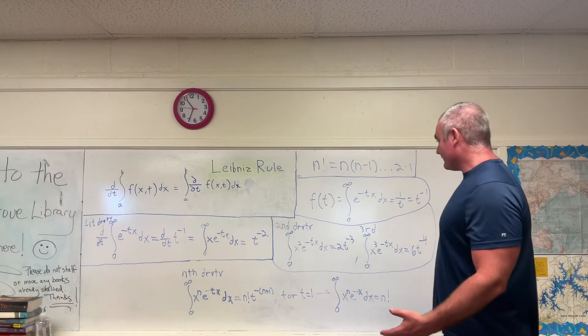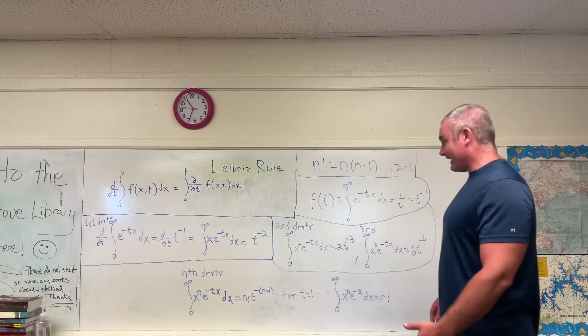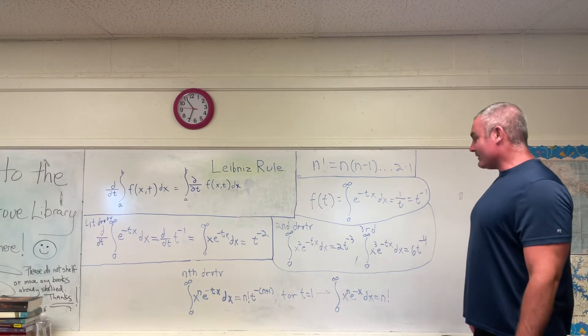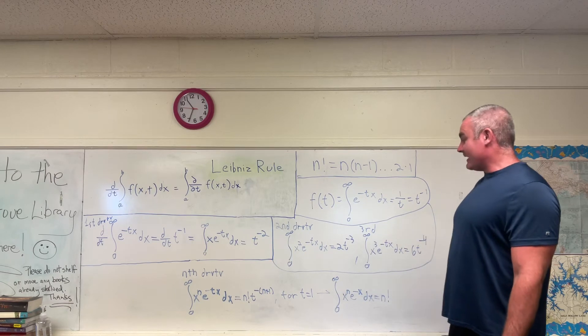We can take a second derivative, which will give us this. The integral from 0 to infinity of x squared e to the negative tx dx is equal to 2t to the negative 3.